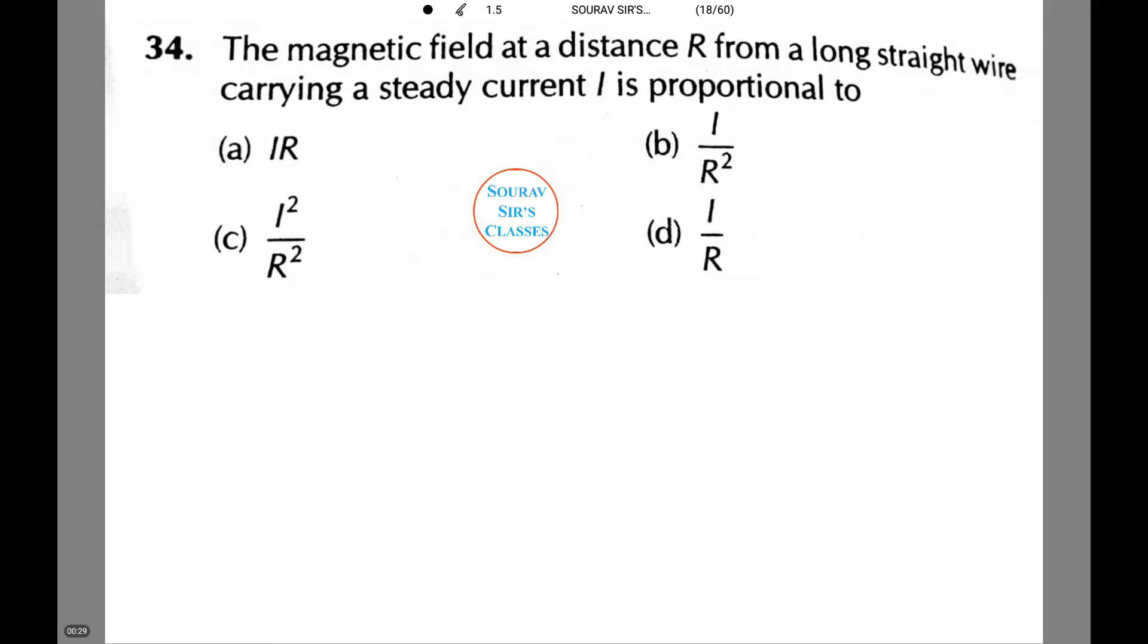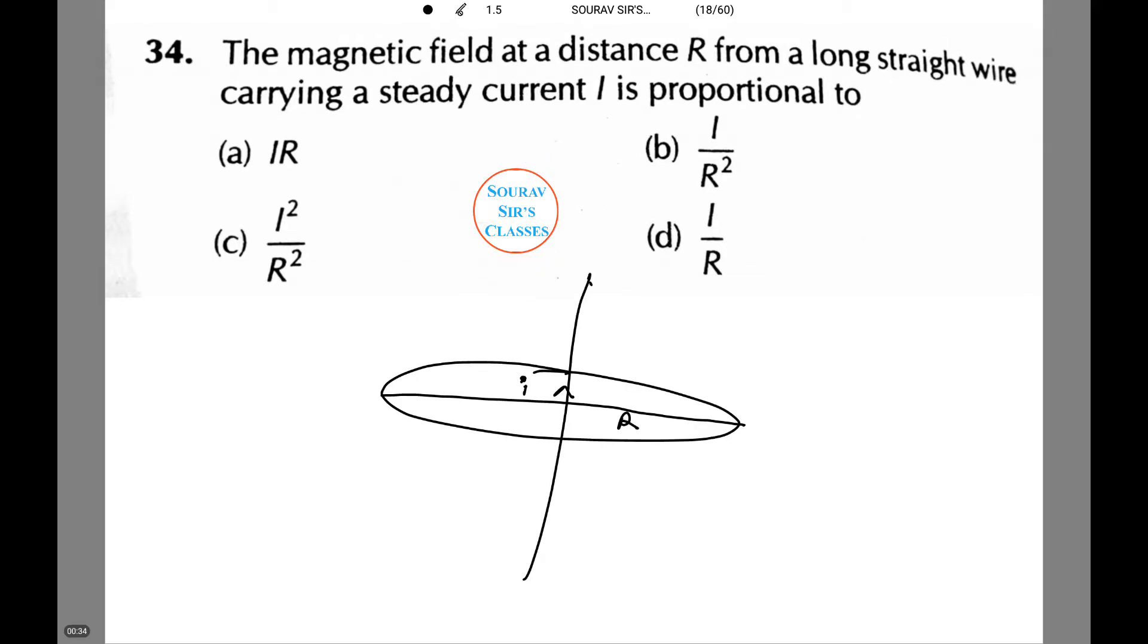Let's apply Ampere's loop law on the wire. Now apply Ampere's loop law. This loop is known as the Amperian loop. Now notice how the current flows.